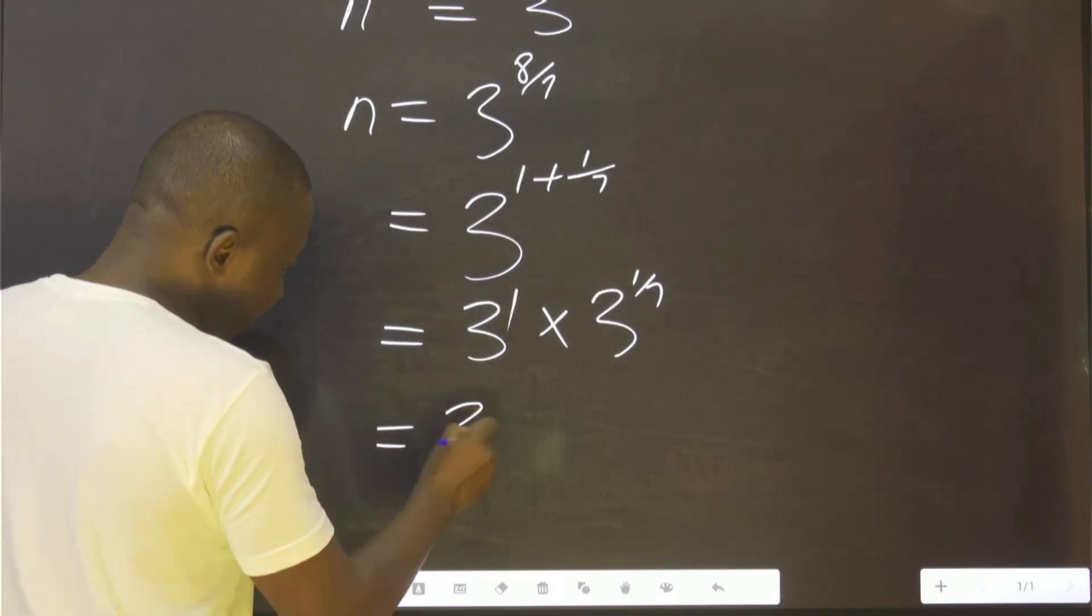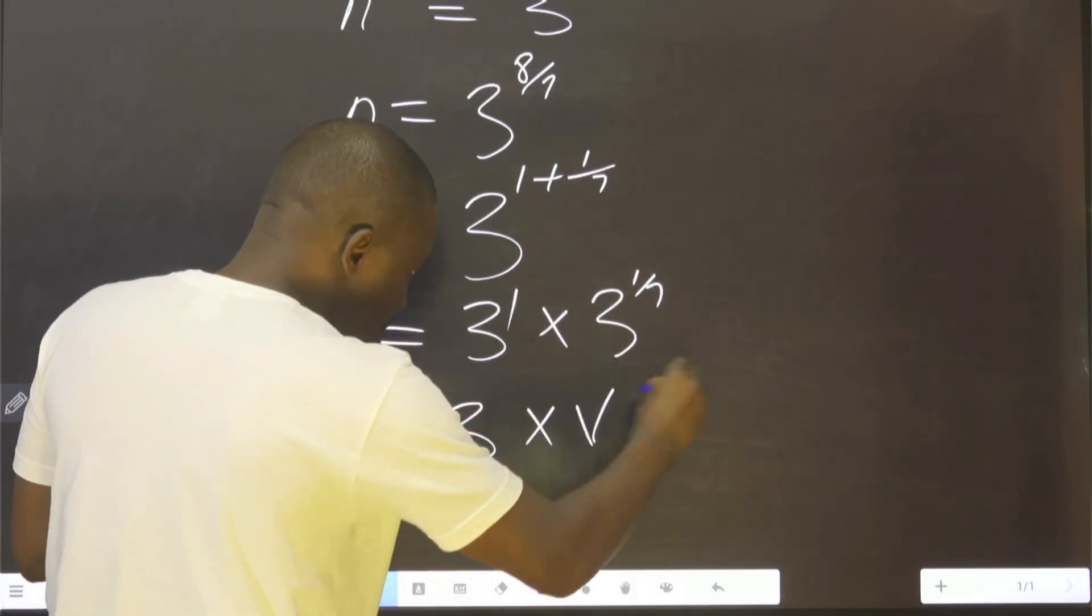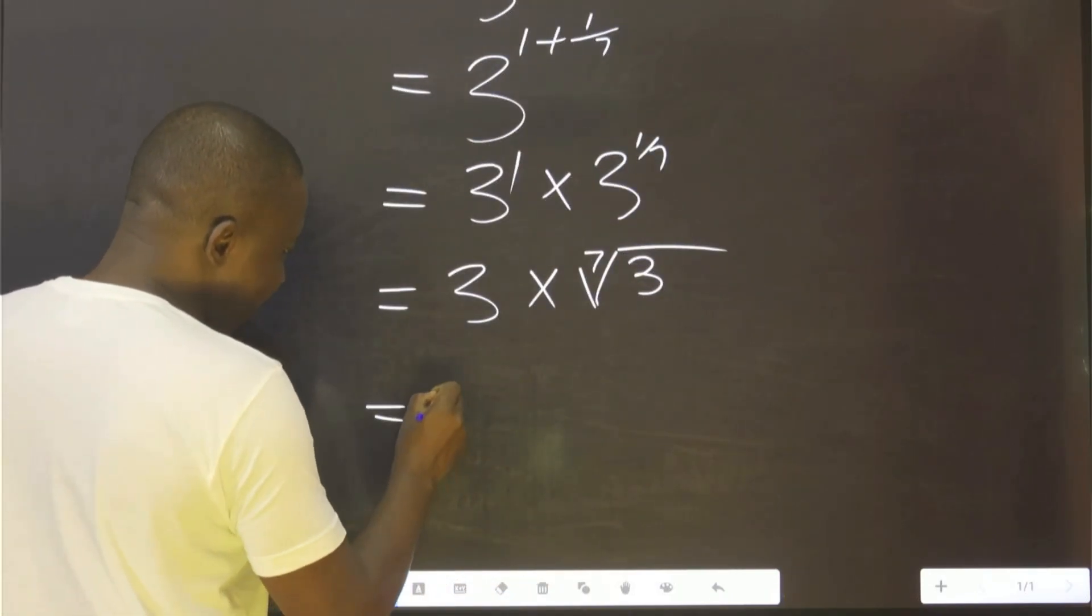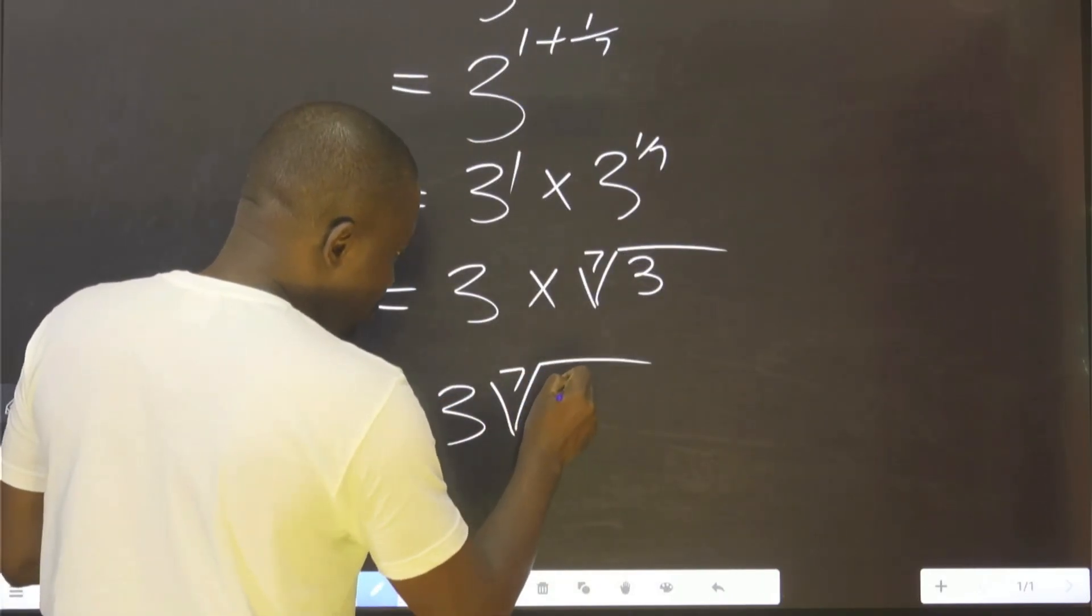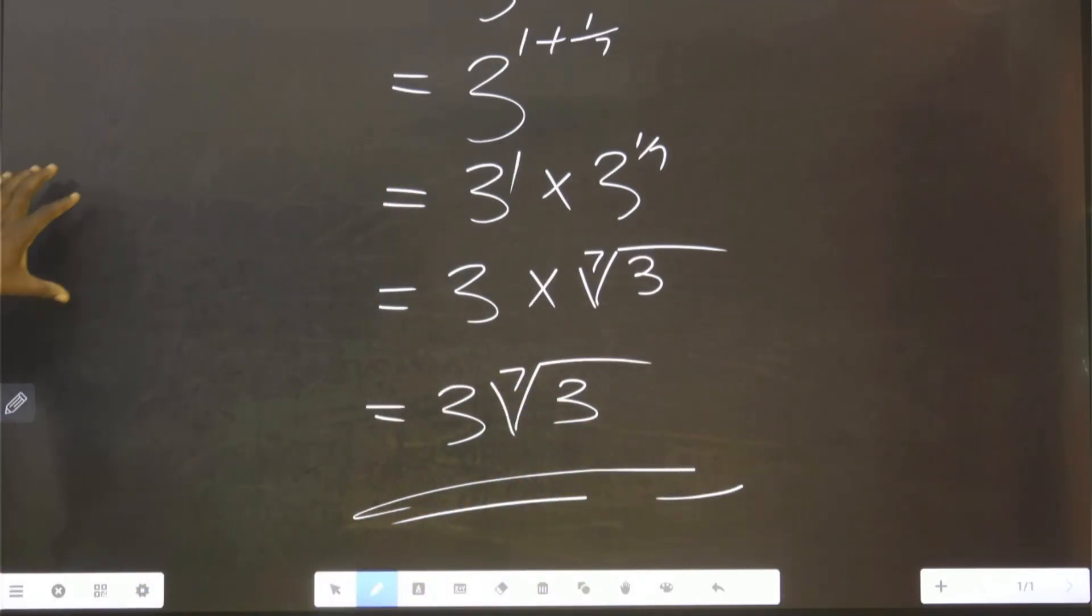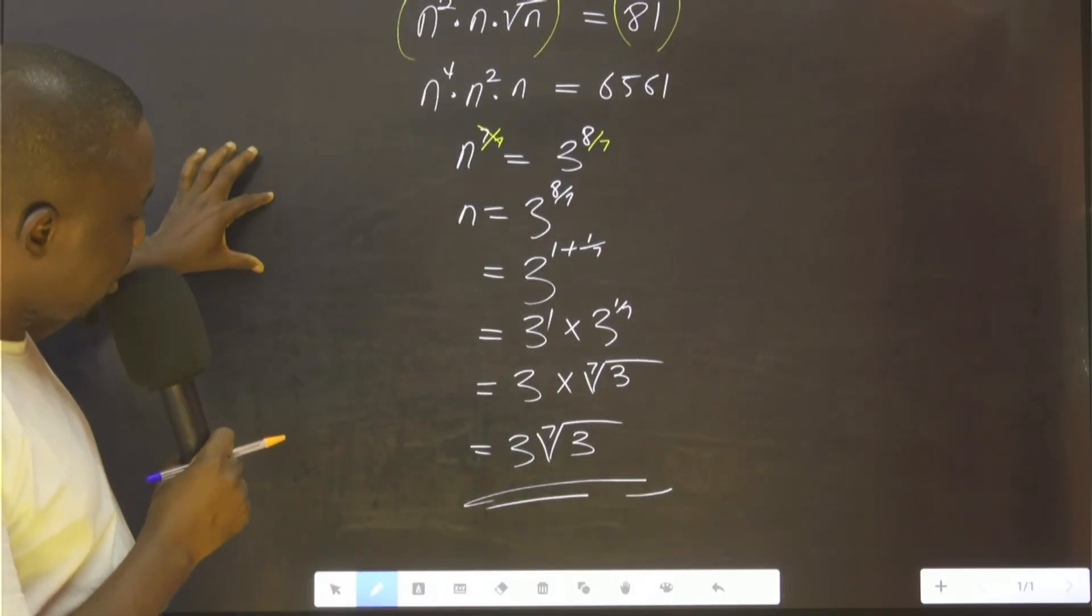What is the meaning of this? It means 3. This means what? The seventh root of 3. It means therefore, I can write this as 3 times the seventh root of 3. That is 3 multiplied by the seventh root of 3. I believe you understand this.